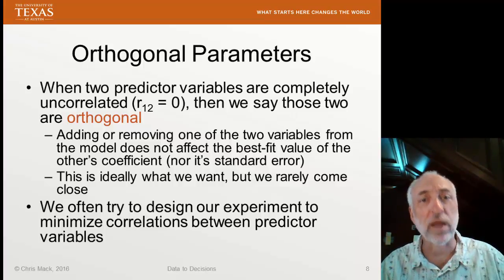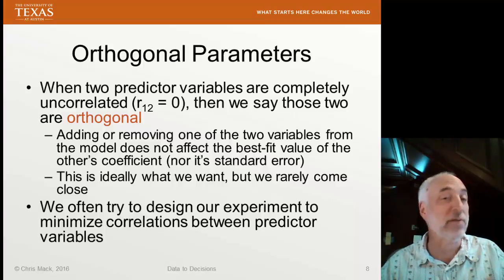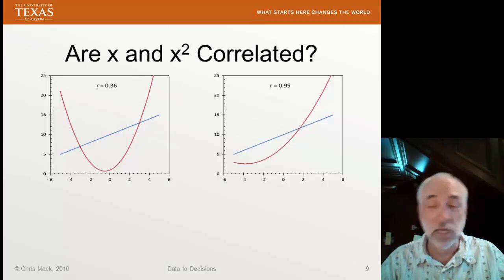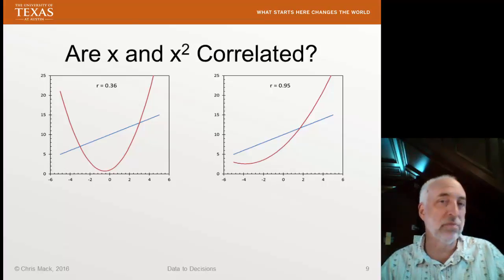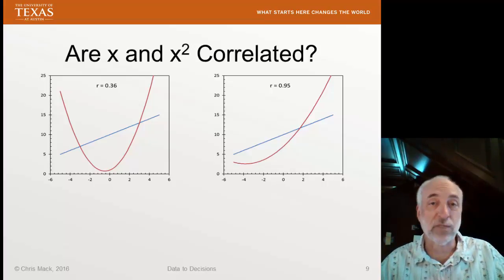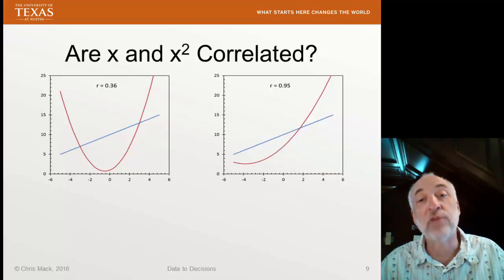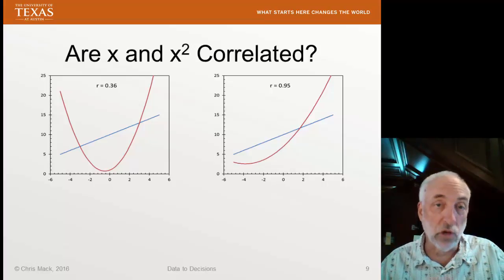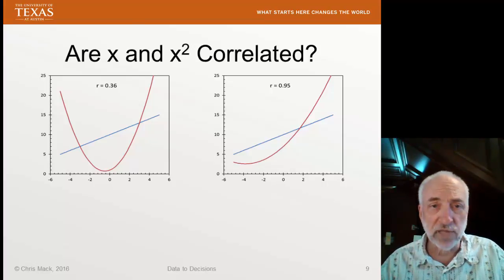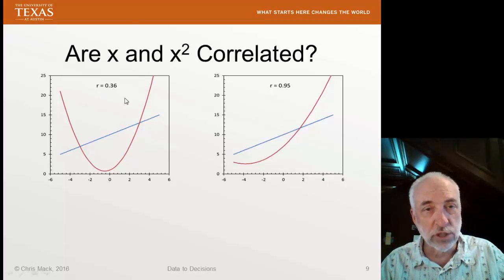While orthogonal parameters are rare and perfect correlation is also rare, we typically are somewhere in between and have to worry about whether the correlations are too high. Often we'll use polynomials to fit — we'll have both x and x squared in our model. Are x and x squared correlated? Well, they obviously are since they both involve x, but how correlated they are depends on the range over which you are going. Here's an example: the correlation coefficient is pretty low at 0.36 over one range of x values, but 0.95 over a different range.